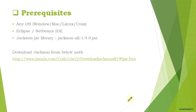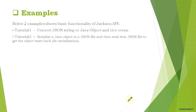Here is the link from where you can download the Jackson jar library version 1.9, which you can add to your project class path. Your IDE can be Eclipse, NetBeans, or any other IDE of your choice. In the next chapter I am going to show you Tutorial 1 and Tutorial 2 to give the basic overview of the JSON API.